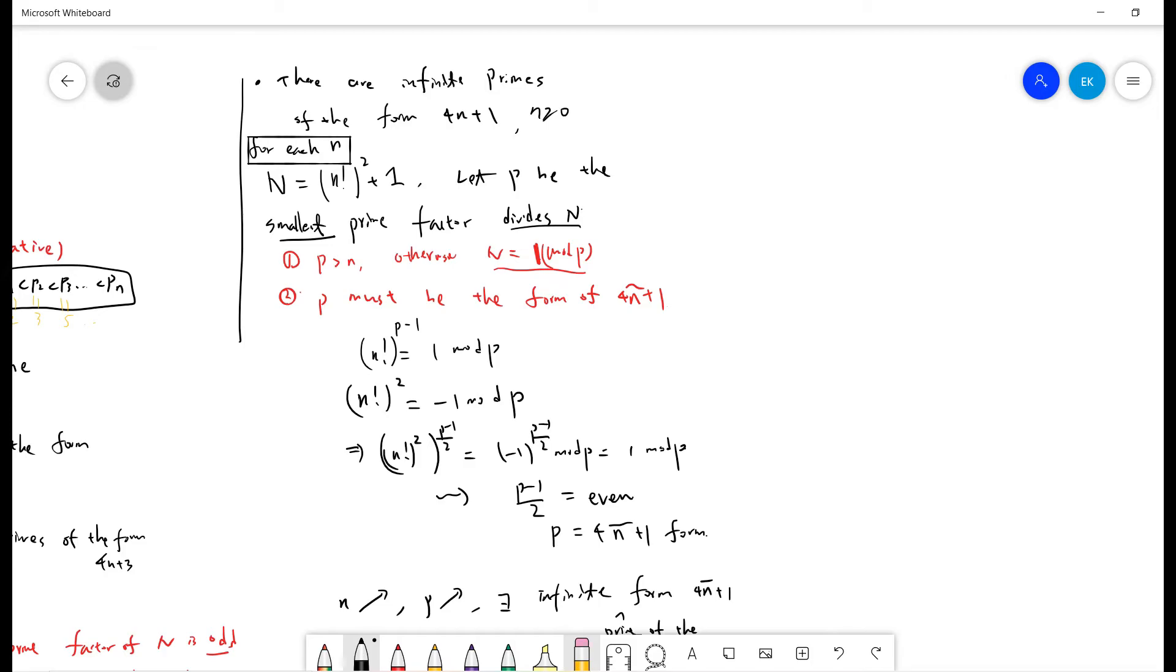Now, n factorial... we already know the capital N divided by p. This equation comes from N equals 0 mod p, by our assumption.